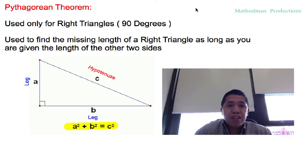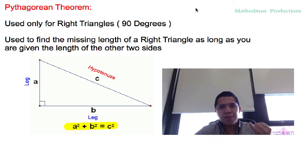Welcome to another MathedMan Productions episode. Today we're going to take it to geometry with one of my most favorite concepts called the Pythagorean Theorem. Remember, the Pythagorean Theorem is used only for right triangles, meaning 90 degree triangles.